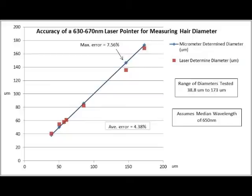the laser measurements were surprisingly accurate, with a maximum error of 7.56% and an average error of only 4.38%. Overall, this data shows that just about any cheap laser pointer will give relatively accurate results for determining the diameter of hair.